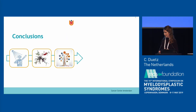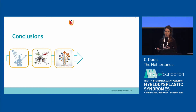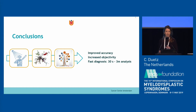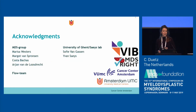In conclusion, we constructed an artificial intelligence workflow with explainable AI techniques that shows which populations contribute to the diagnosis. It consists of preprocessing, population detection, and classification. We improve accuracy compared to the IFS, increase objectivity, and achieve near real-time diagnosis in 30 seconds to 3 minutes. Using the single-tube analysis also reduces the amount of materials required. I would be happy to take any questions.